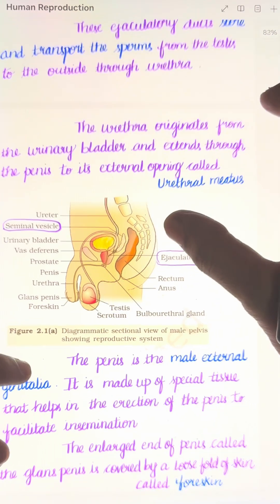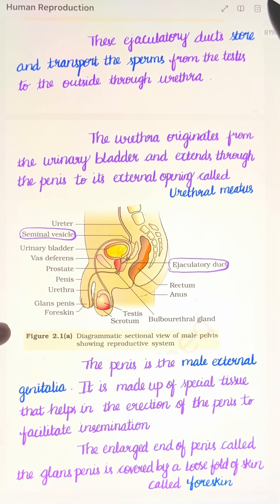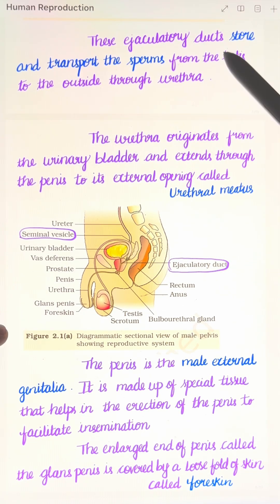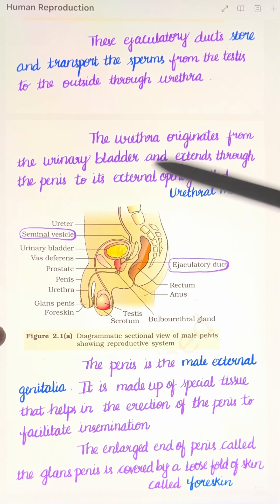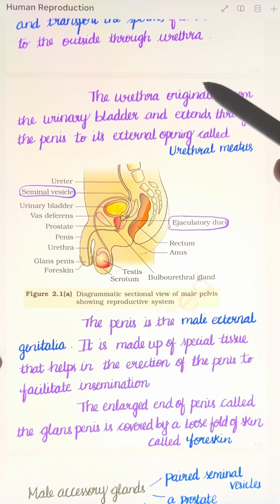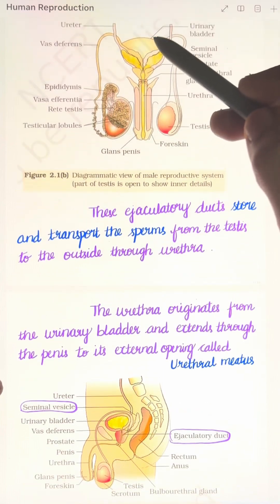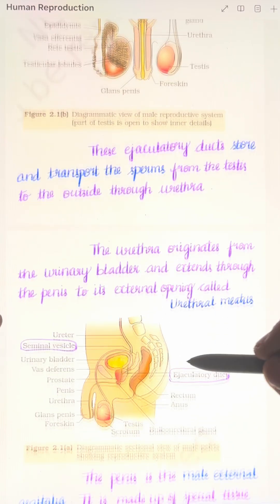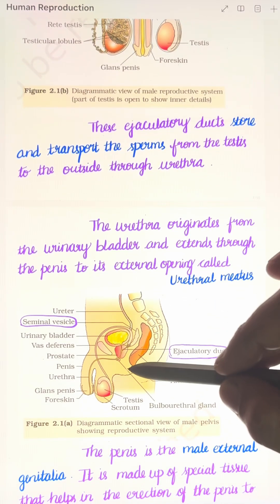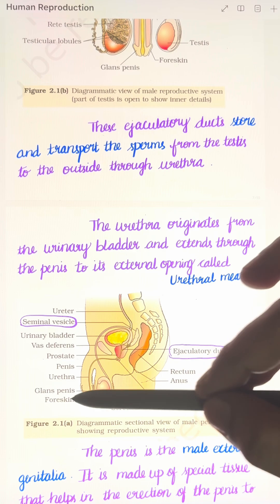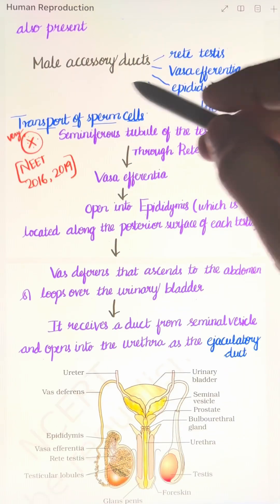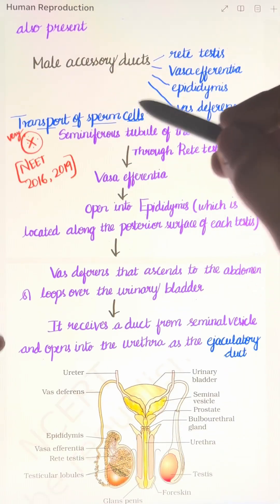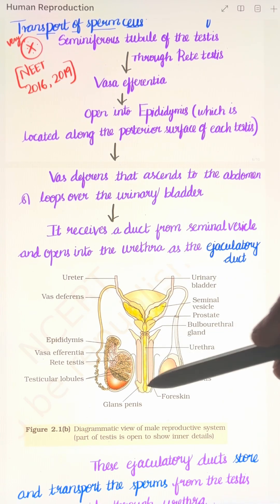The ejaculatory duct stores and transports sperm from the testis to the outside through the urethra. The urethra originates from the urinary bladder and extends through the penis to its external opening called the urethral meatus. This completes the transport of sperms from the testis to the urethra.